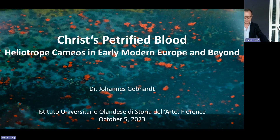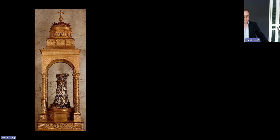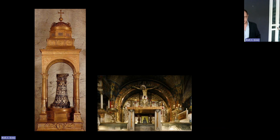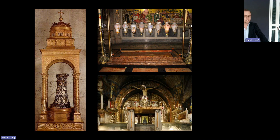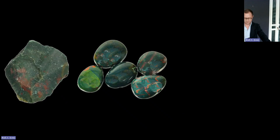Objects supposedly connected to the blood of Christ have been considered powerful witnesses of salvation, such as the column on which Christ was scourged and tortured before the crucifixion, now in the church of Santa Prassede in Rome, or the rock of Golgotha — the site of Christ's crucifixion — and the stone of unction where Jesus's body was prepared for burial, both housed in the church in Jerusalem. Soaked in Christ's blood, these stones are referred to as some of Christianity's most precious relics. At the same time, semi-precious stones in red hues were incorporated into works of art as symbolic references to the blood of Christ.